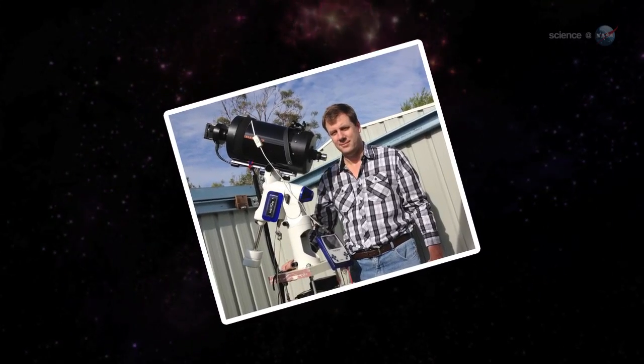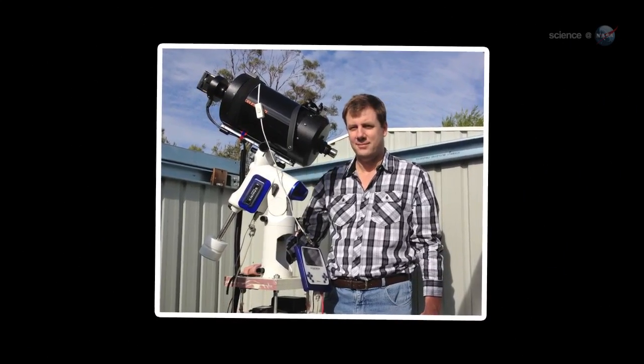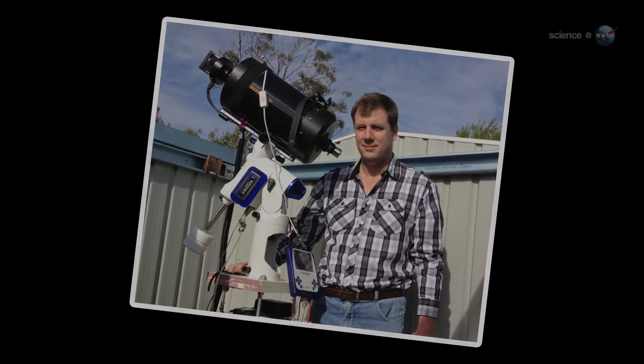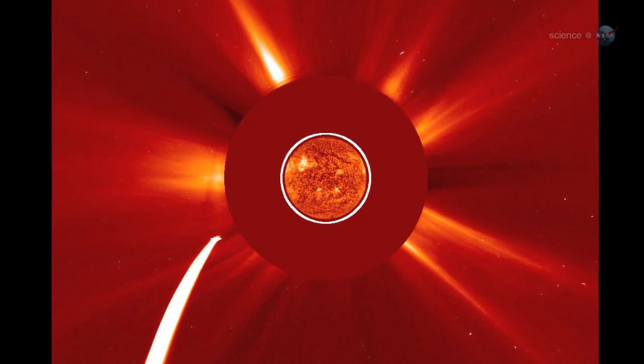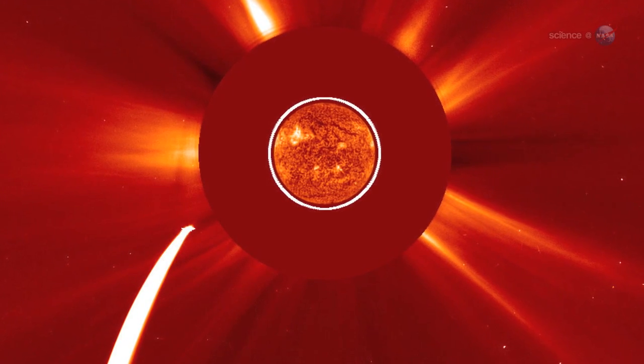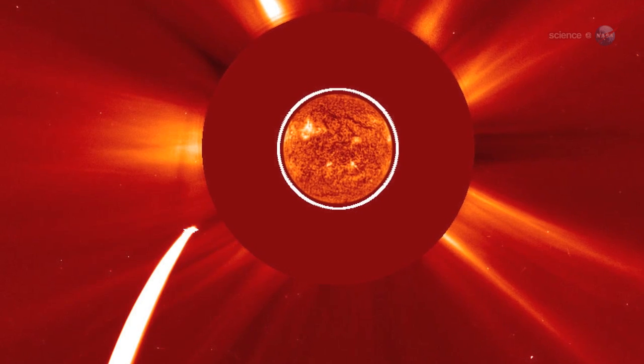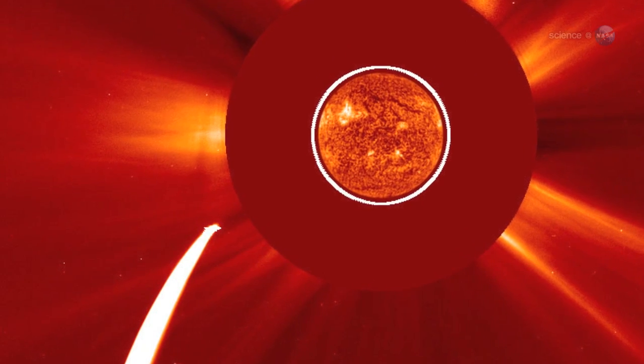Last November, amateur astronomer Terry Lovejoy discovered a different kind of comet. The icy fuzzball he spotted in the sky over his backyard observatory in Australia was heading almost directly for the Sun. On December 16th, less than three weeks after he found it, Comet Lovejoy would swoop through the Sun's atmosphere only 120,000 kilometers above the stellar surface.